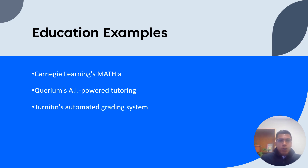The last example is Turnitin's automated grading system. Turnitin is developing an AI-powered grading system that can evaluate essays and written assignments, providing detailed feedback on grammar, style, and content. This technology not only streamlines the grading process but also ensures consistent and objective evaluation of student work.